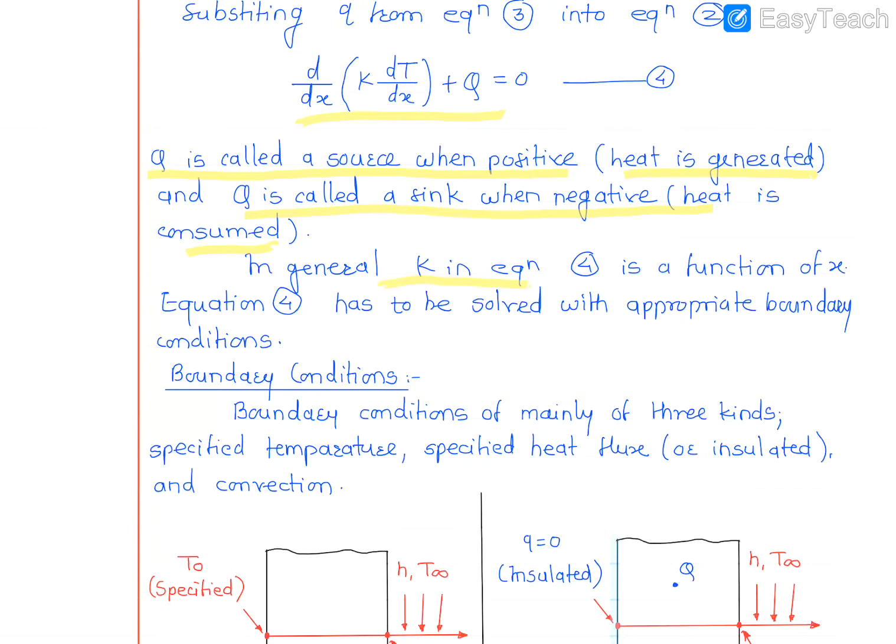In general, K in equation 4 is a function of x, the direction in which the temperature gradient occurs, and it has to be solved with appropriate boundary conditions. This is all about one-dimensional steady-state heat conduction.